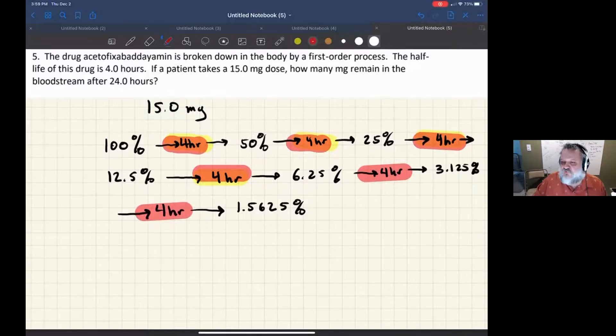This is one method you can use to at least get an idea of what the range of the concentration should be. Even if it was 22 hours, we know that it would fall between this half-life, and it would fall between this half-life.